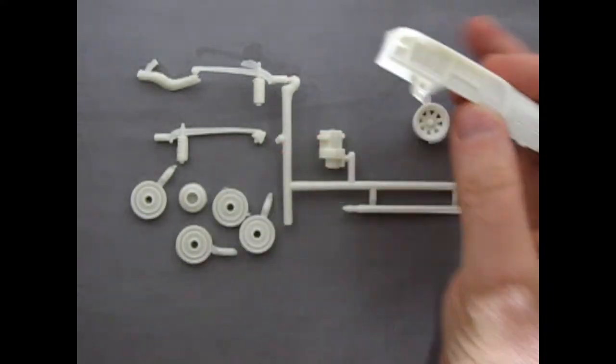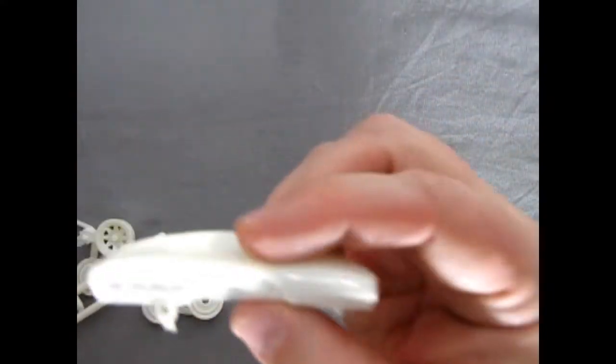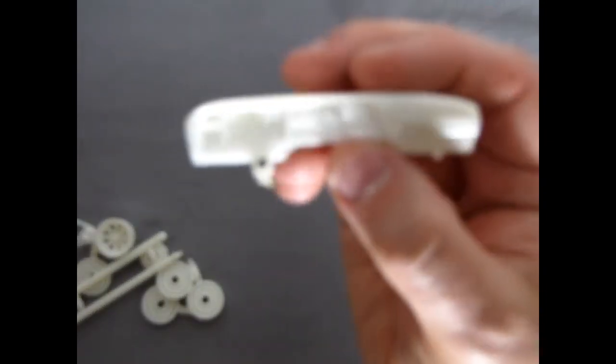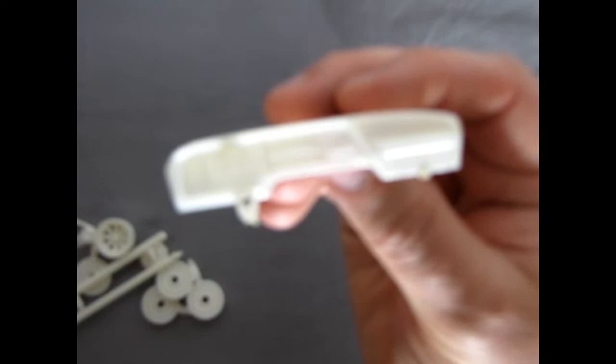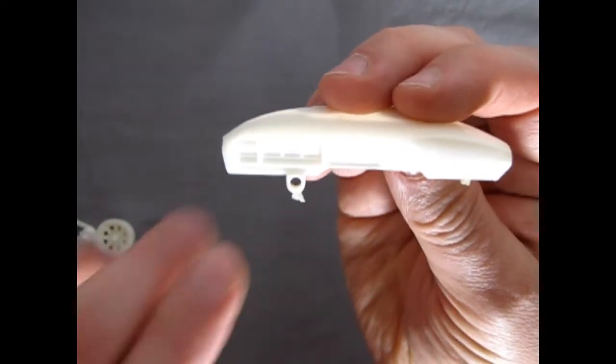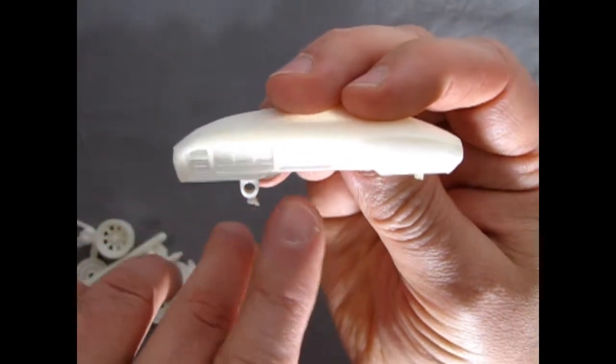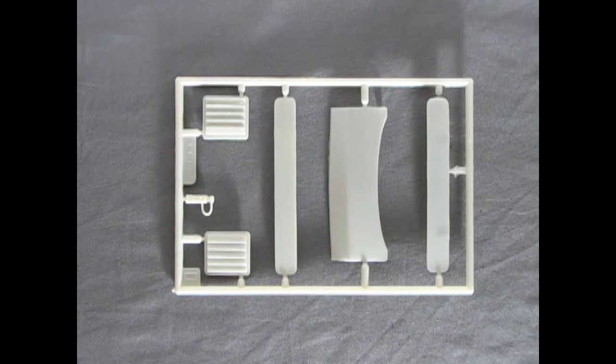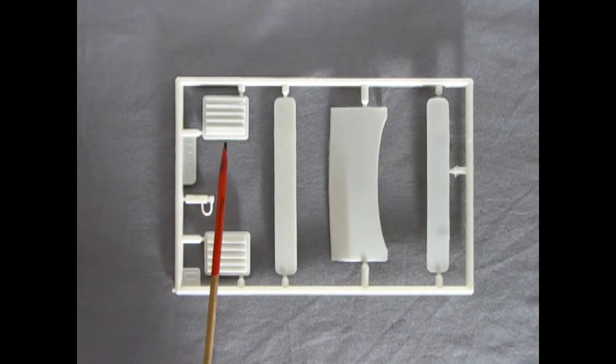And then finally we've got our nice dashboard here. Let me move that out of the way. And as you can see it's got all those great details in there. Oh come on camera focus for me. There. All those great details in there such as our instrument cluster and our radio and everything else.